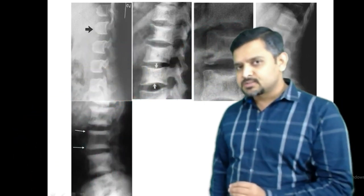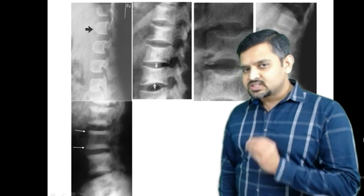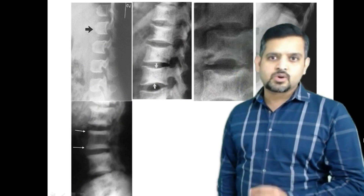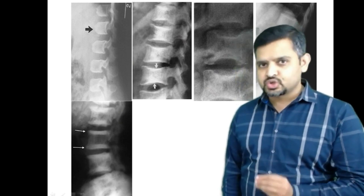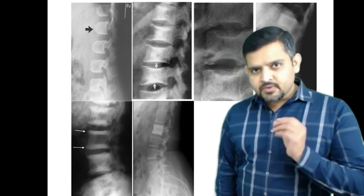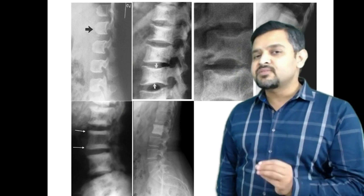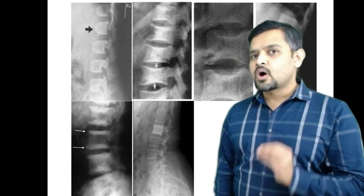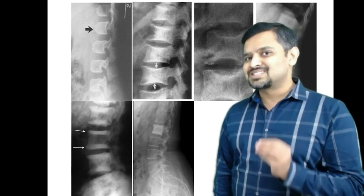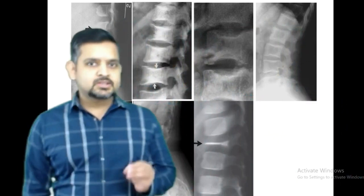This is a rugger jersey spine or sandwich appearance of renal osteodystrophy, and this appearance is an ivory vertebra of Paget's disease.